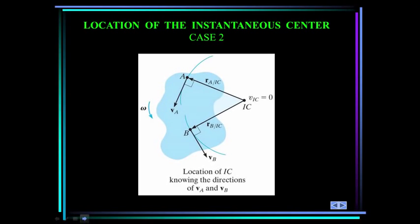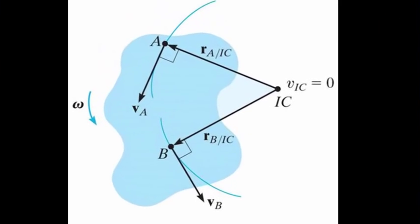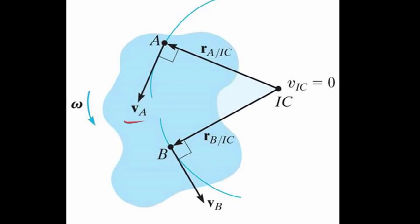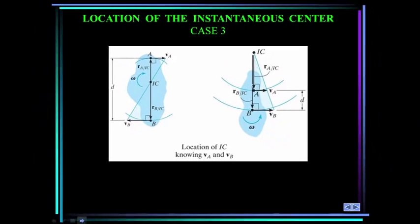Case two occurs when the lines of action of two non-parallel velocities v_A and v_B are known. We can draw perpendicular lines from those two vectors, and where they intersect is the instantaneous center.